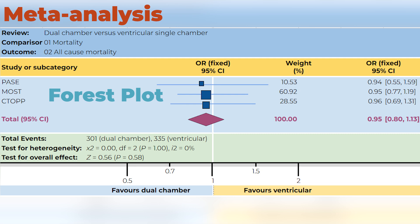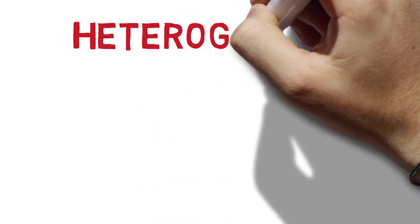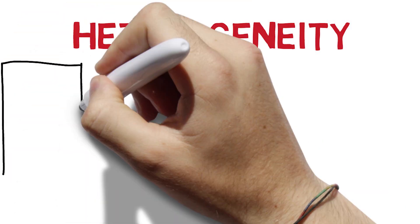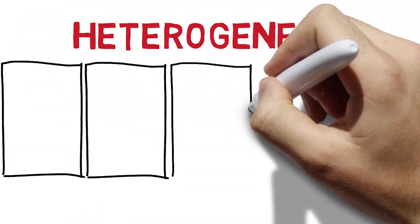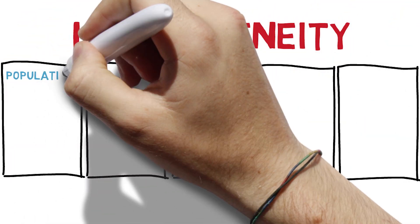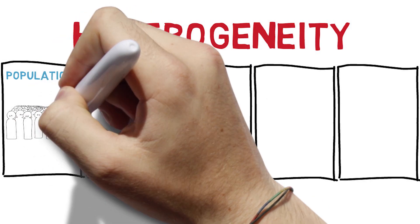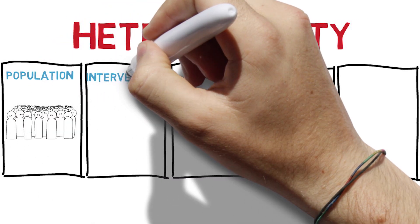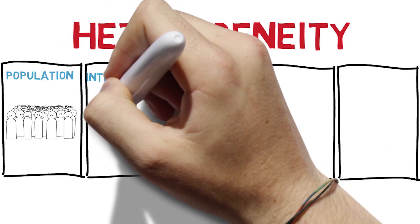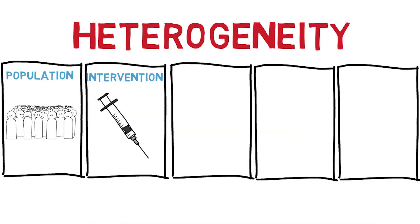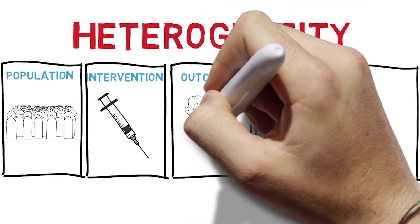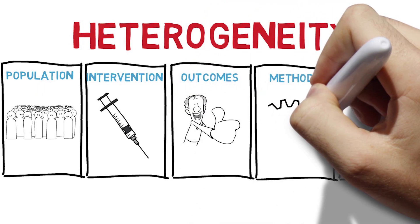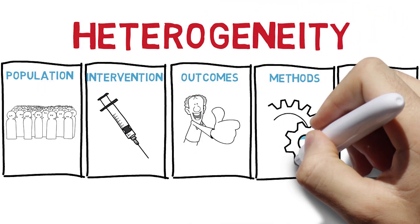Importantly, studies can only be combined in this way if they're sufficiently similar. If studies are too heterogeneous — too different from each other — then it doesn't make sense to pool the results. Heterogeneity can result from: differences in the population being considered, differences in the intervention, differences in the outcome being measured, methodological differences, and chance.